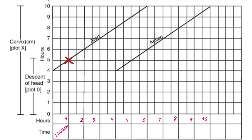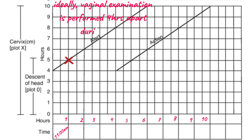Note that the ideal time for doing vaginal examination and determining cervical dilation of the woman in labor is done 4 hours apart. However, if due to your discretion as a midwife, doctor, or attending clinician you think labor is progressing too fast or too slow, you may decide to do vaginal examination more frequently than every 4 hours.